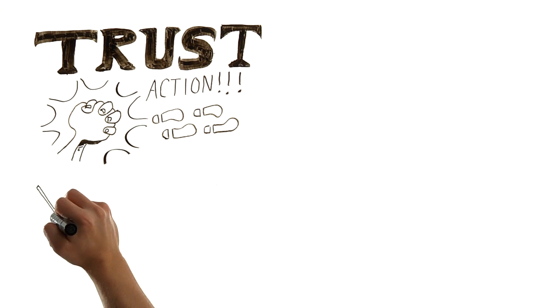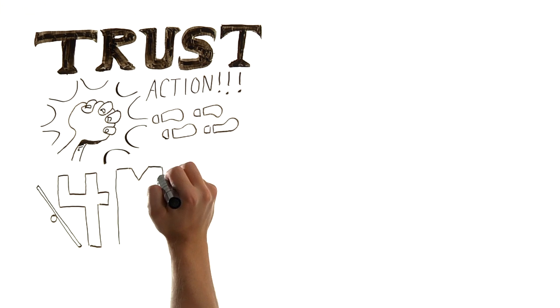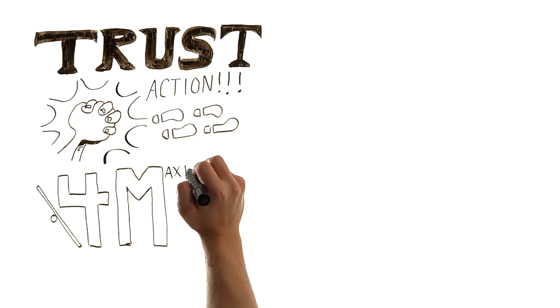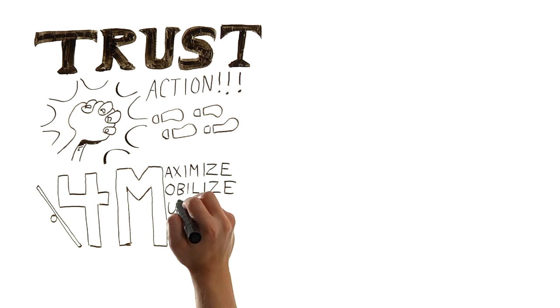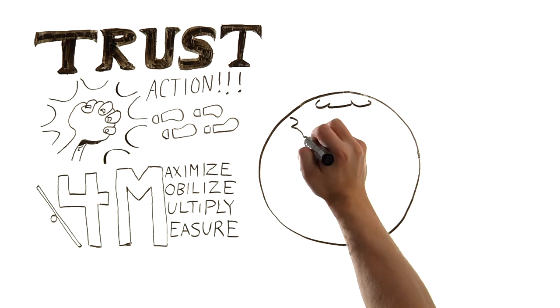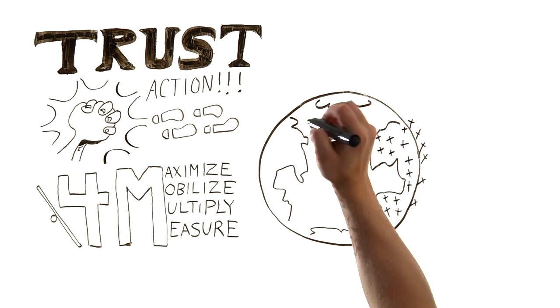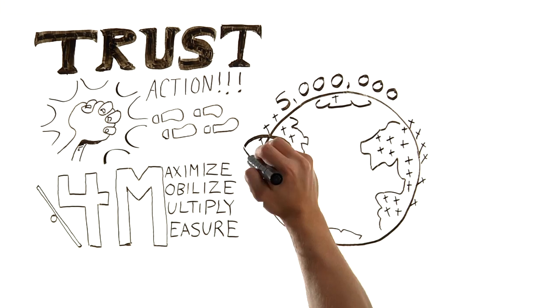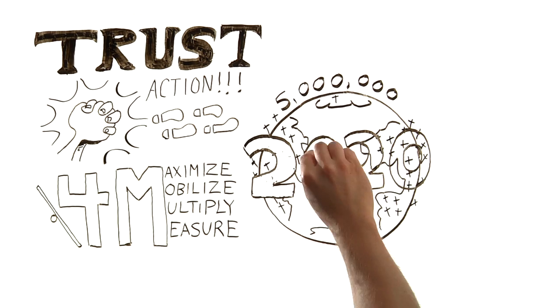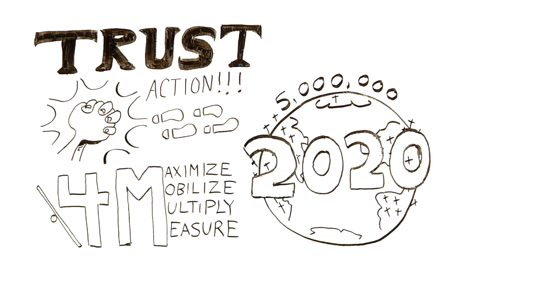Secondly, we seek to leverage four essential phases that we call the 4M strategy: Maximize, Mobilize, Multiply, and Measure. Let us see how together we can leverage these strategies toward our shared mission to see 5 million churches and leaders established on Earth by the end of 2020.